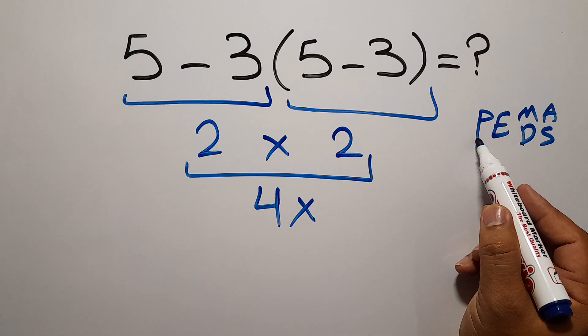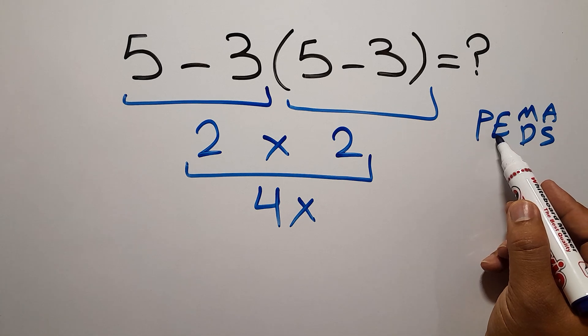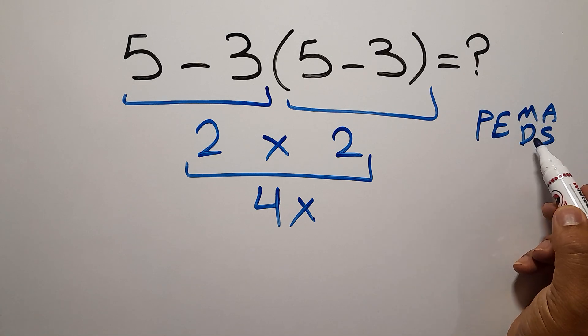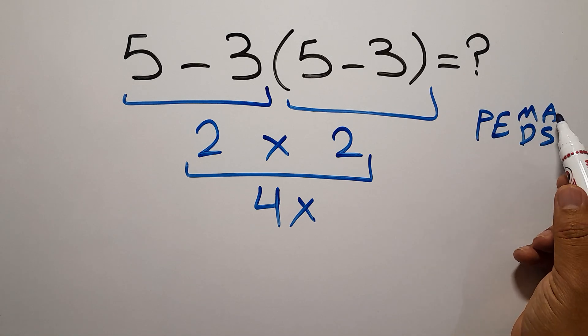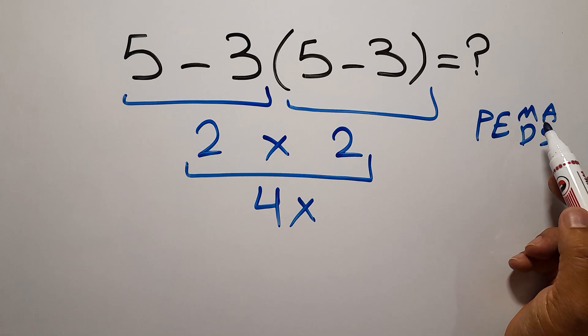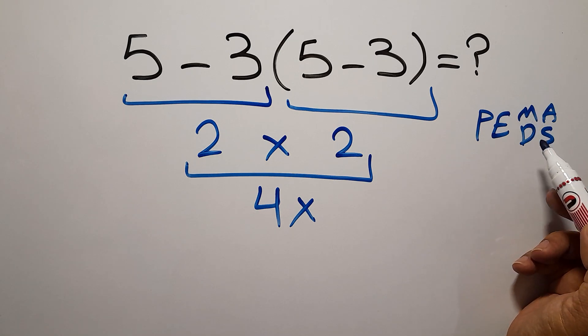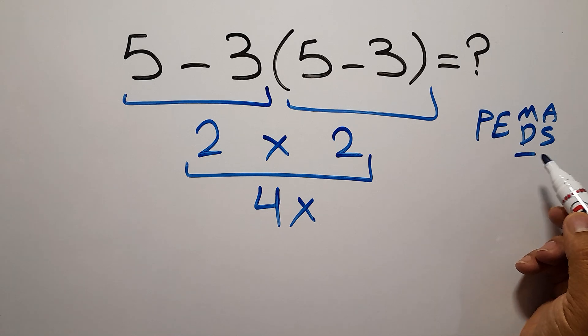First we have to do parentheses then exponents then multiplication or division and finally addition or subtraction. Remember that multiplication and division have equal priority and we have to work from left to right and the same applies to addition and subtraction.